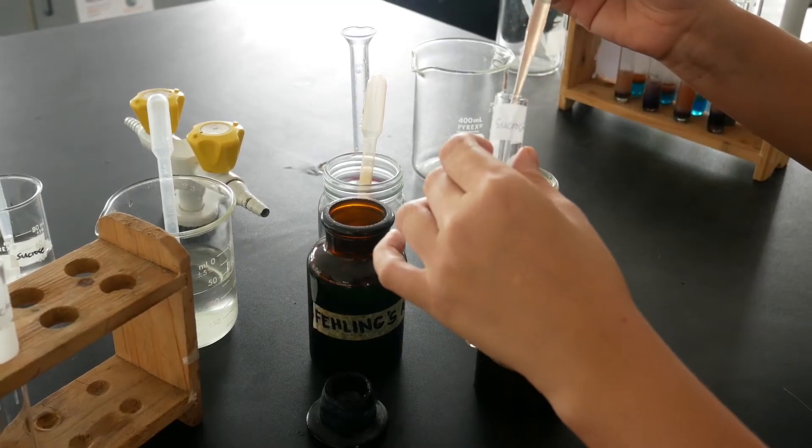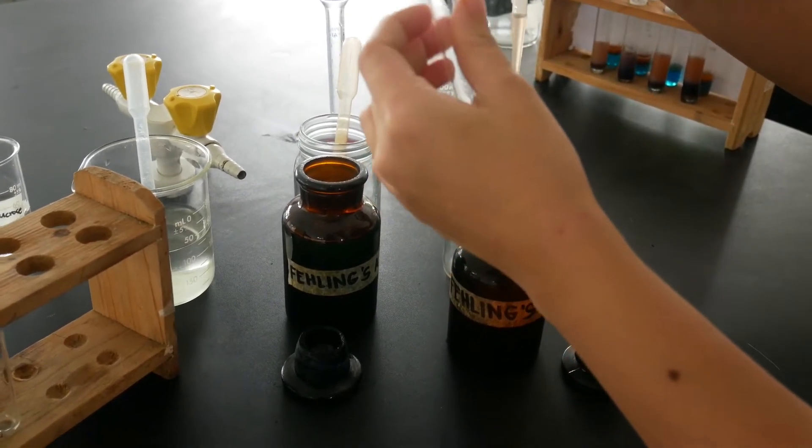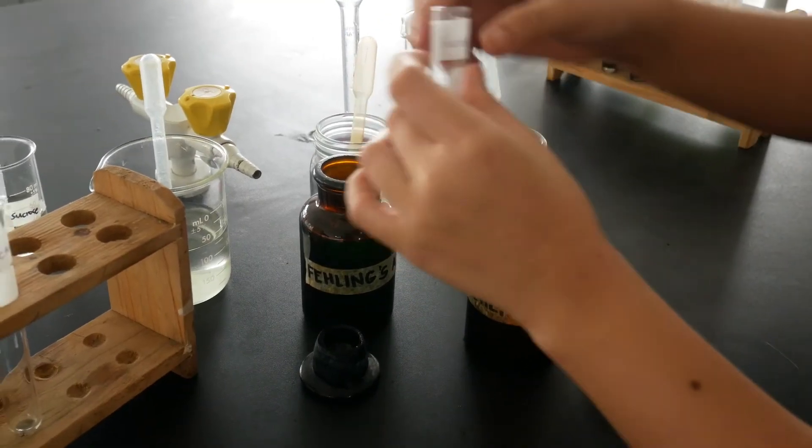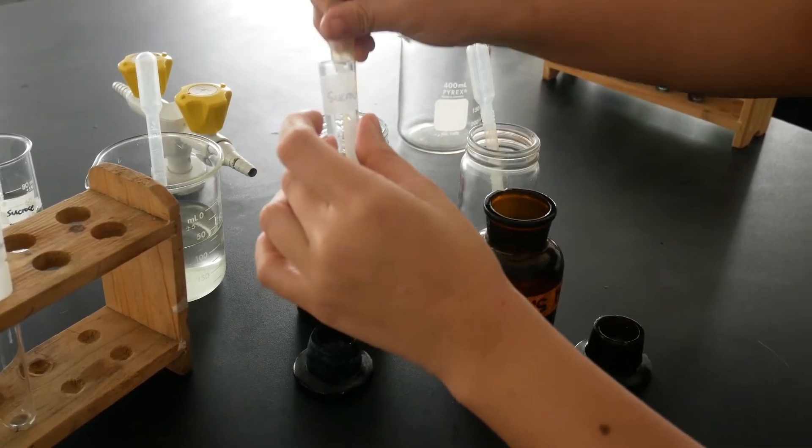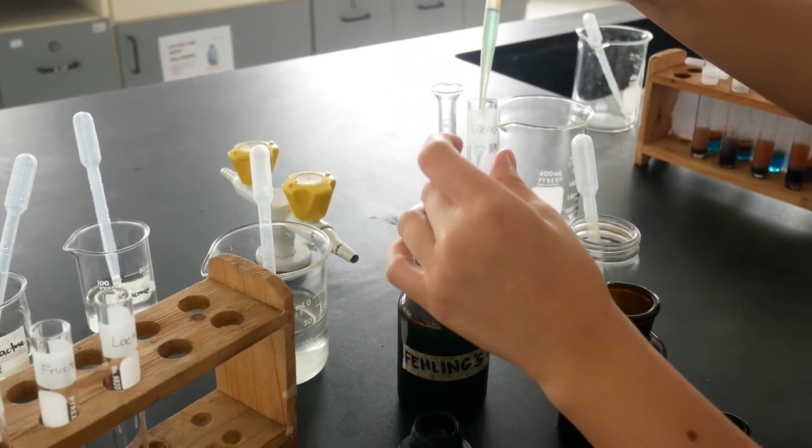Fehling's solution consists of solution A and solution B. So for the procedures, in each of the test tubes, we are going to mix 1 ml of Fehling's solution A and 1 ml of Fehling's solution B and add 3 ml of water.